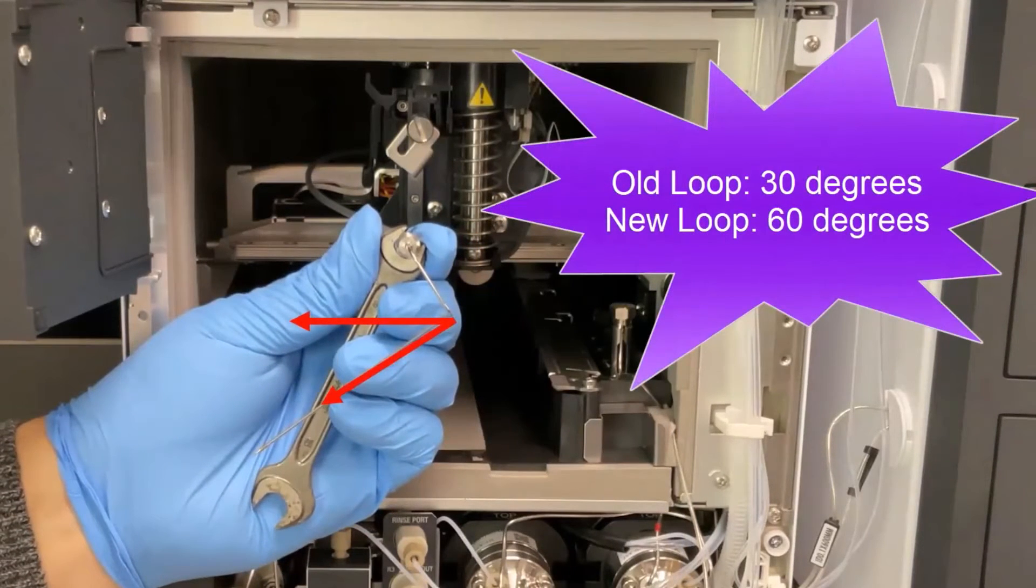If using the old loop, use two wrenches to turn the needle 30 degrees. If installing a new loop, turn the needle 60 degrees.